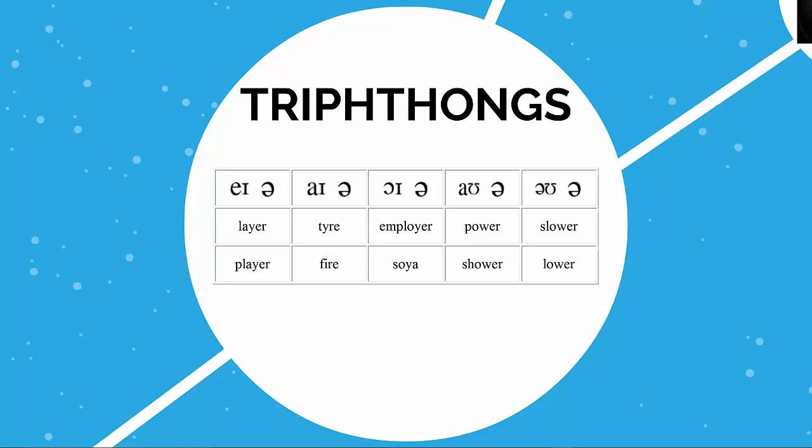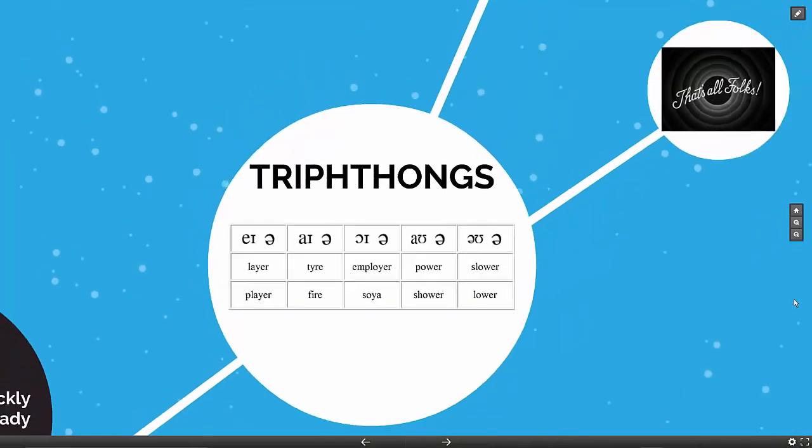Here we have added a large schwa to insist upon the fact that a triphthong is just a diphthong plus schwa. However, the correct transcription will be more like this.